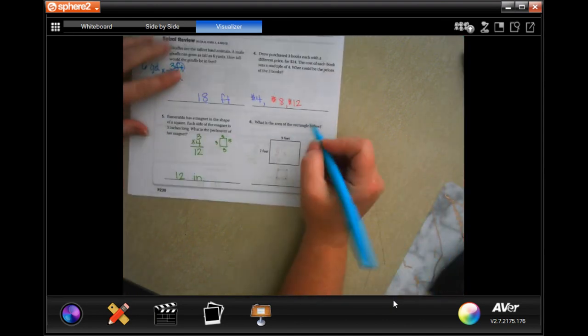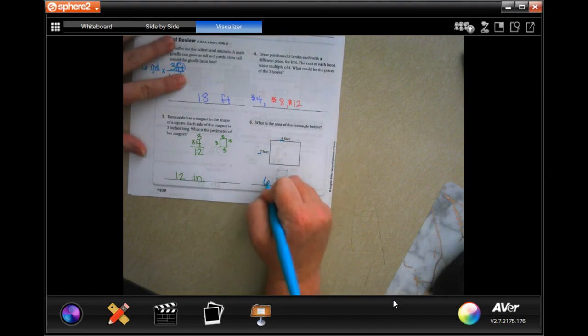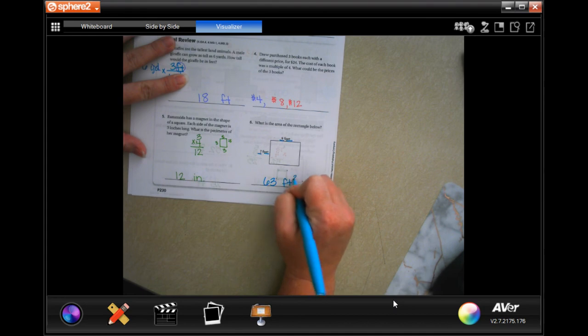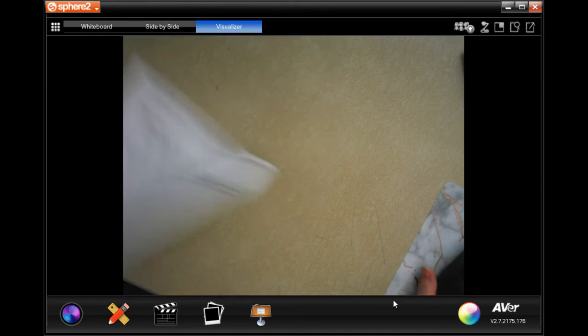What is the area of the rectangle below? Well, 7 times 9 is 63, and feet times feet is feet squared. All done, guys. All right, thanks for hanging out for 13.3, come on back for 13.4.